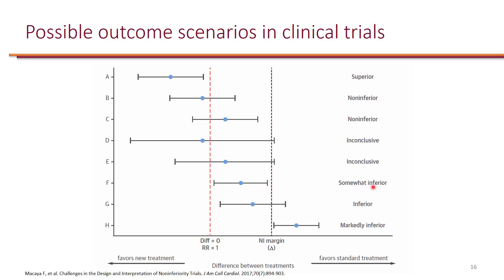Choice F is sometimes called somewhat inferior because the entire confidence interval is to the right of the line of no difference, but for this class, don't worry about that. Just focus on what's non-inferior, what's superior, and what's not non-inferior. D, E, G, and H are not non-inferior because they are on the right of or cross the delta.